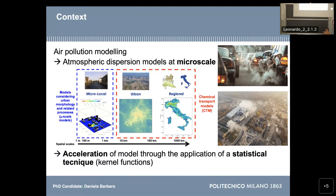Microscale in the field of atmospheric models means that we are considering models that are able to resolve the concentration field with a horizontal scale of some meters, and they are models that can take into account the effects of obstacles, such as buildings, on the dispersion of pollutants inside the atmosphere. These types of models are useful, for example, to simulate traffic sources inside cities.